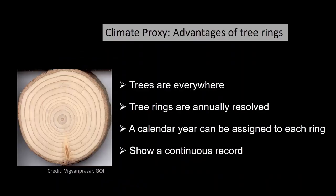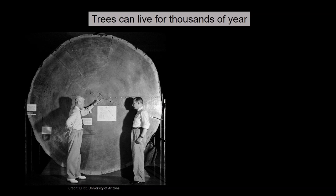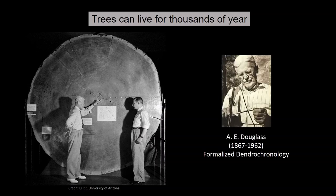As a climate proxy, tree rings have clear advantages. Trees are everywhere — unlike ice cores, which are only available at high latitude and high altitude regions. Tree rings are annually resolved, meaning each year there is one ring, so we can assign a calendar year to every individual ring. They also show a continuous record with no breaks. A tree can live for thousands of years. A. E. Douglas is considered the one who formalized this subject: dendrochronology, the science of tree rings.